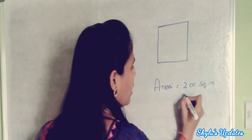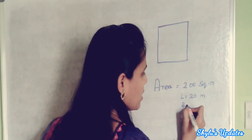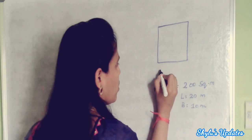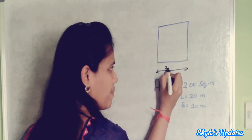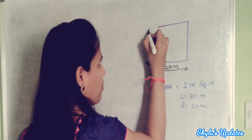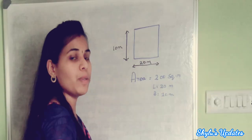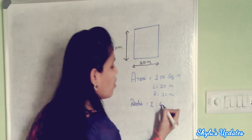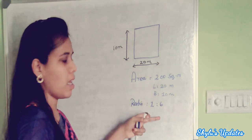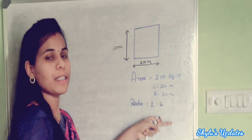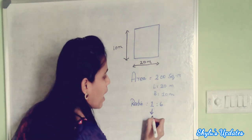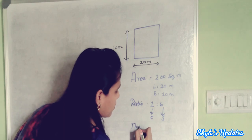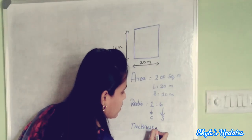So 200 square meters means the length is 20 meters and the breadth is 10 meters. The ratio is 1 to 6 for wall plaster, where 1 denotes part of cement and 6 denotes part of sand. The thickness would be 12 mm.